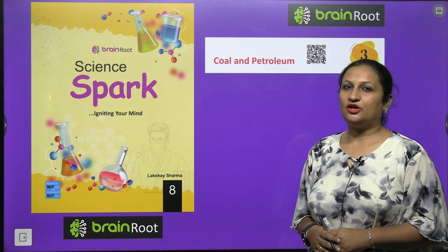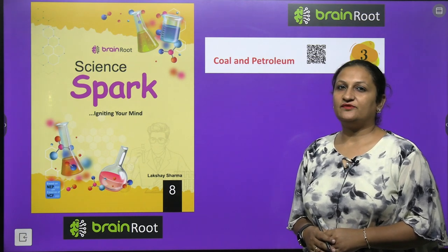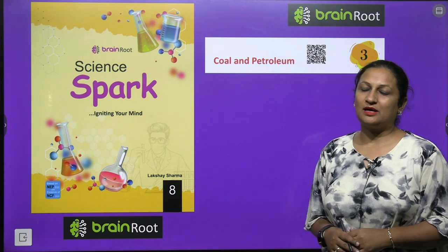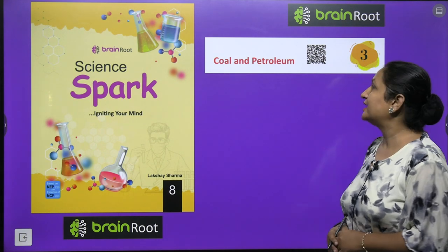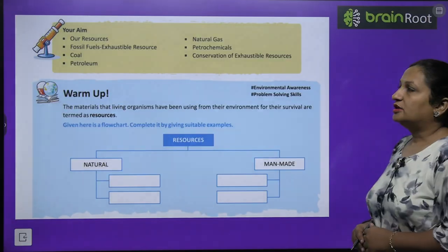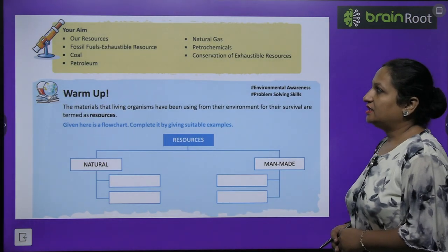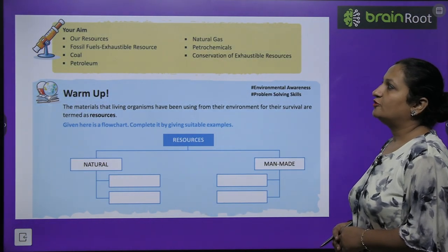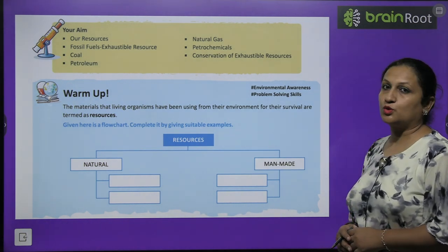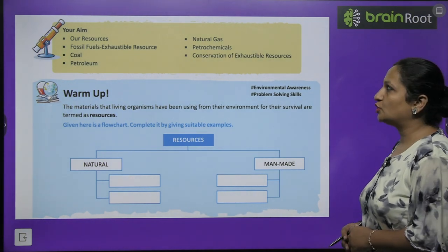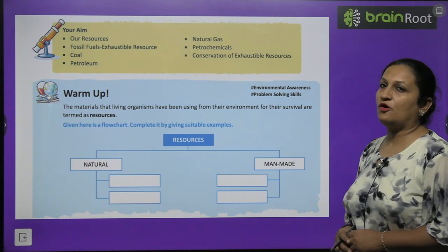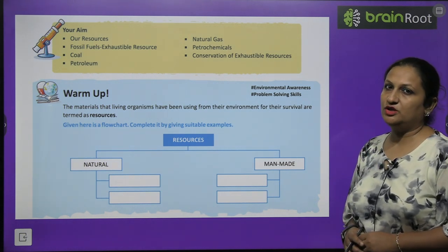Hello, my dear children. This is Shikha Arora and today we are going to start with Class 8 Science Chapter 3, that is Coal and Petroleum. The main aim of this chapter will cover: our resources, fossil fuels, exhaustible resources, coal, petroleum, natural gas, petrochemicals, and conservation of exhaustible resources.